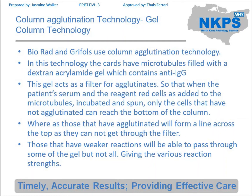The cards will have microtubules in, each with a different reagent. Within those microtubules there is a dextrin acrylamide gel which contains anti-IgG. This gel acts as a filter for agglutinates. What happens is you will add in the patient's red cells or plasma and the reagent needed at the top of the microtubule. This will be incubated if required and then spun down. As it's spun it is pushed down into the gel.